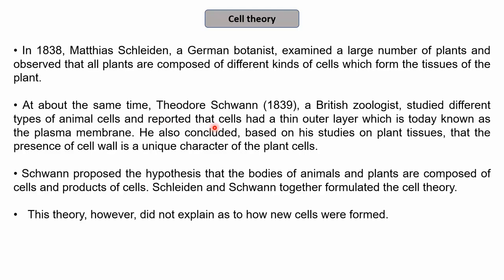Schwann also concluded, based on his studies on plant tissues, that the presence of the cell wall is a unique character of plant cells not present in animal cells. So cell wall is one of the differentiating characters between plant and animal cells — plant cells have cell walls while animal cells do not; they just contain the cell membrane. Schwann proposed that the bodies of animals and plants are composed of cells and products of cells.